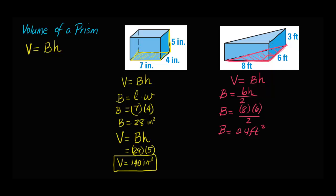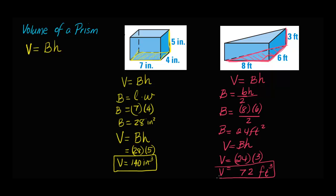Now if I were to fill it with popcorn, for example, how much popcorn would that hold? That would be volume. Now I have to take the base that I just found and multiply it times the height. The height of this prism is 3 feet tall. So we take 24, which is the area of the base, times 3, the height, and that will equal 72 cubic feet. Remember, volume is always a cubed unit. And there you have two examples for the volume of a prism.